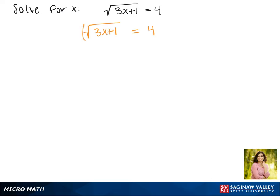We'll start by squaring both sides, and on the left, squaring that square root will cancel it out. So now we have 3x plus 1 equals 4 squared, which is 16.